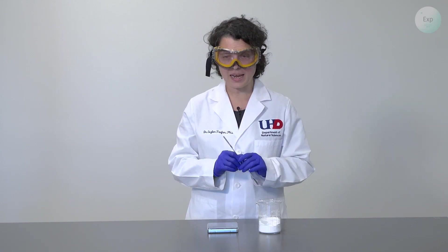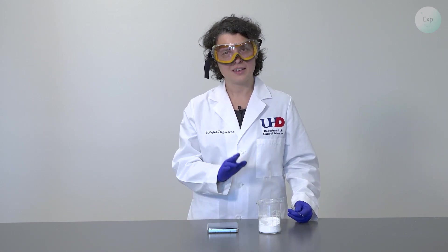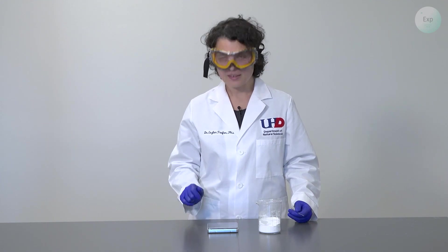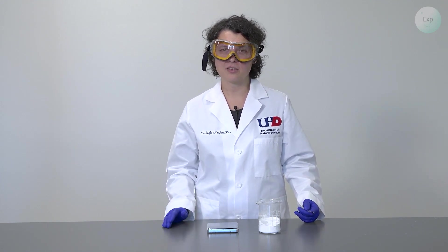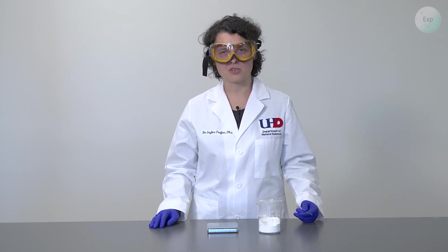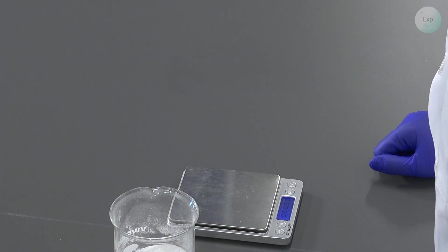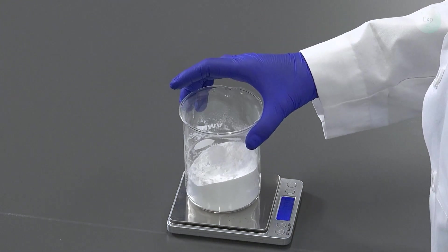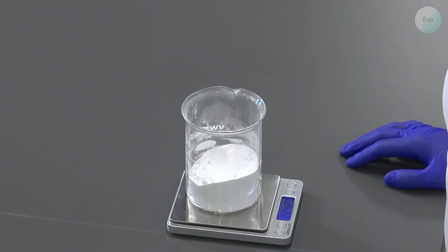All we have left to do now is to record the final mass of our beaker with now what we hope is sodium carbonate and then we can move on to calculate the theoretical yield and the percent yield of the decomposition reaction. So for this last step we need to turn on our scale and when it says 0.00 we place our beaker with the decomposed baking soda on top of it and we record a final mass which for us is 224.20 grams.